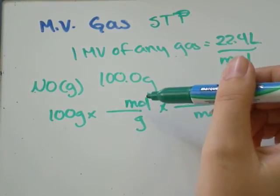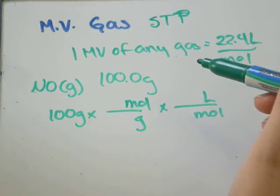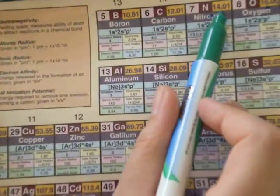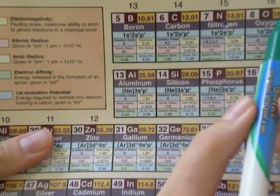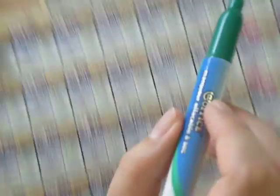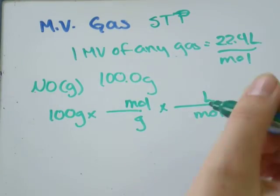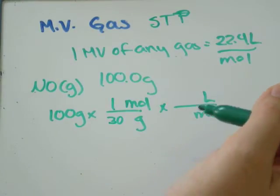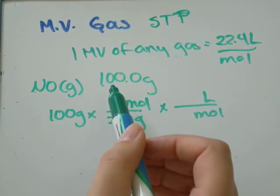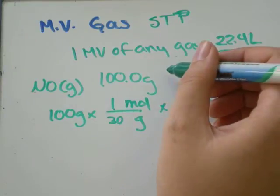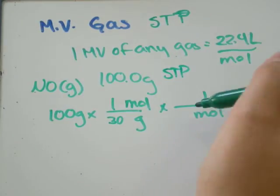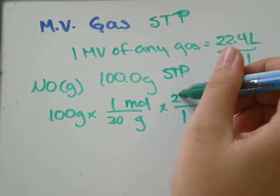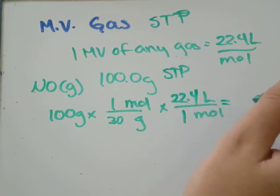So, first we need the molar mass of NO. That would be nitrogen has 14 grams plus oxygen has 16. So, 14 plus 16 would just be 30 grams per mole. Our question should state that it's at STP. So that we know that for every one mole, it will occupy 22.4 liters of space.